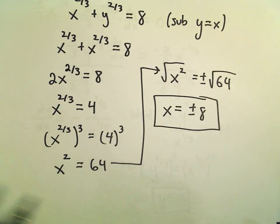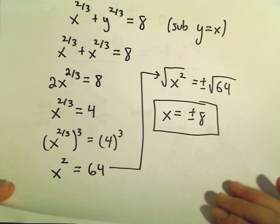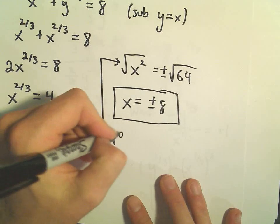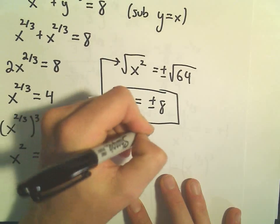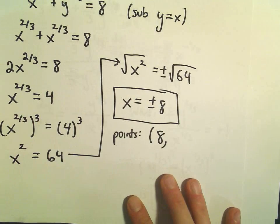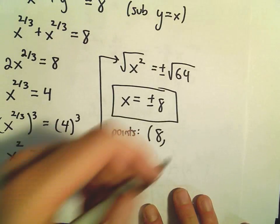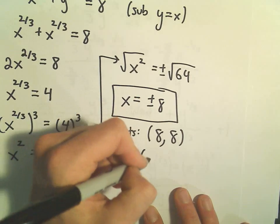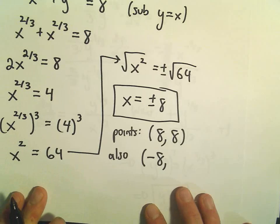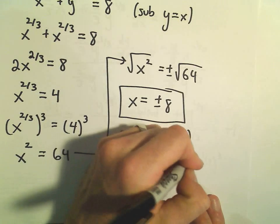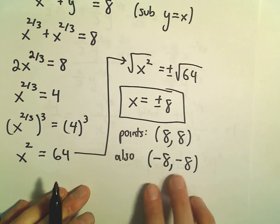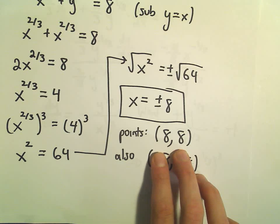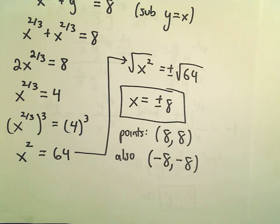We also know that the x-coordinate and y-coordinate have to be the same. So the points would be: if x equals positive eight, then y has to be positive eight as well. And if x equals negative eight, since y has to be that same value, the other point has y-coordinate negative eight. So the two points in this case are (8, 8) and (-8, -8).